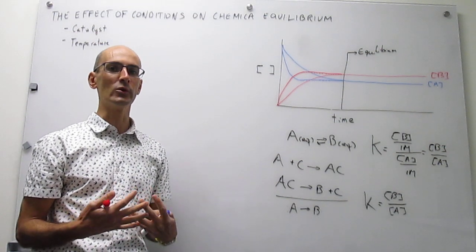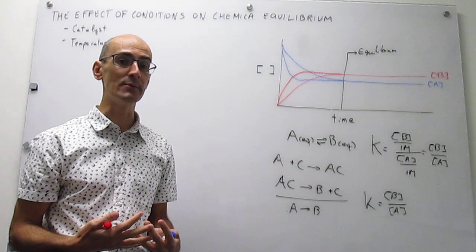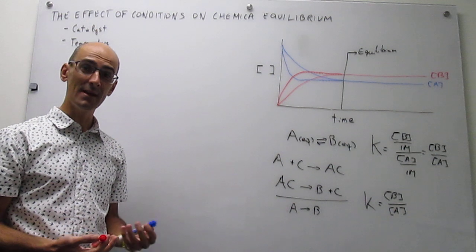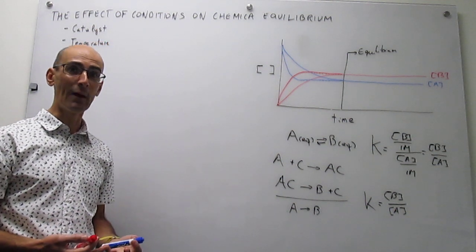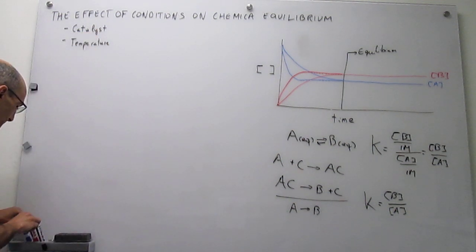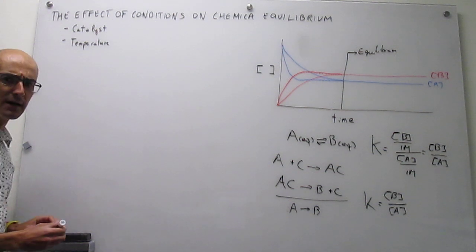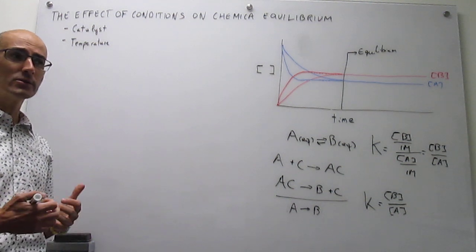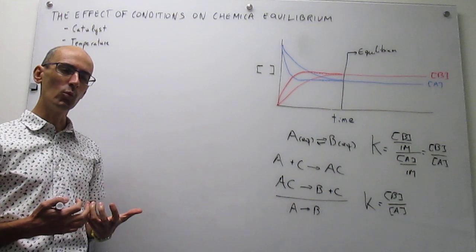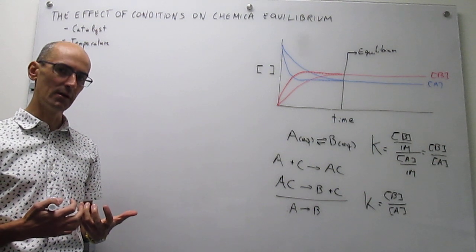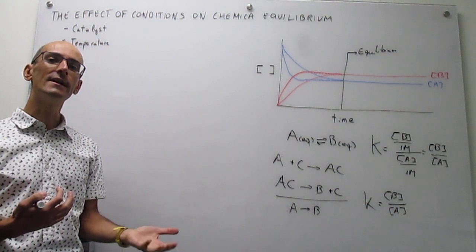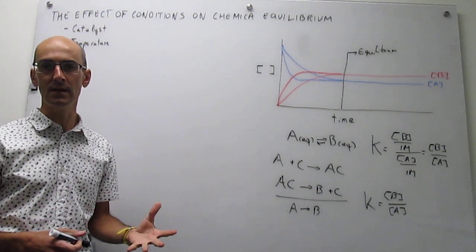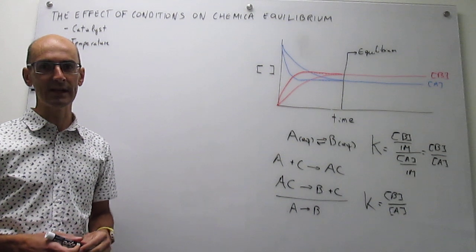The second effect we are going to study in this video is the effect of temperature. We are going to do it at a qualitative level here, and in the next video we will do it at a quantitative level. To examine the effect of temperature on an equilibrium constant, that is going to be tied to whether the reaction is exothermic or endothermic. I'm going to draw energy diagrams for both cases and examine how an increase in temperature would change the equilibrium constant.